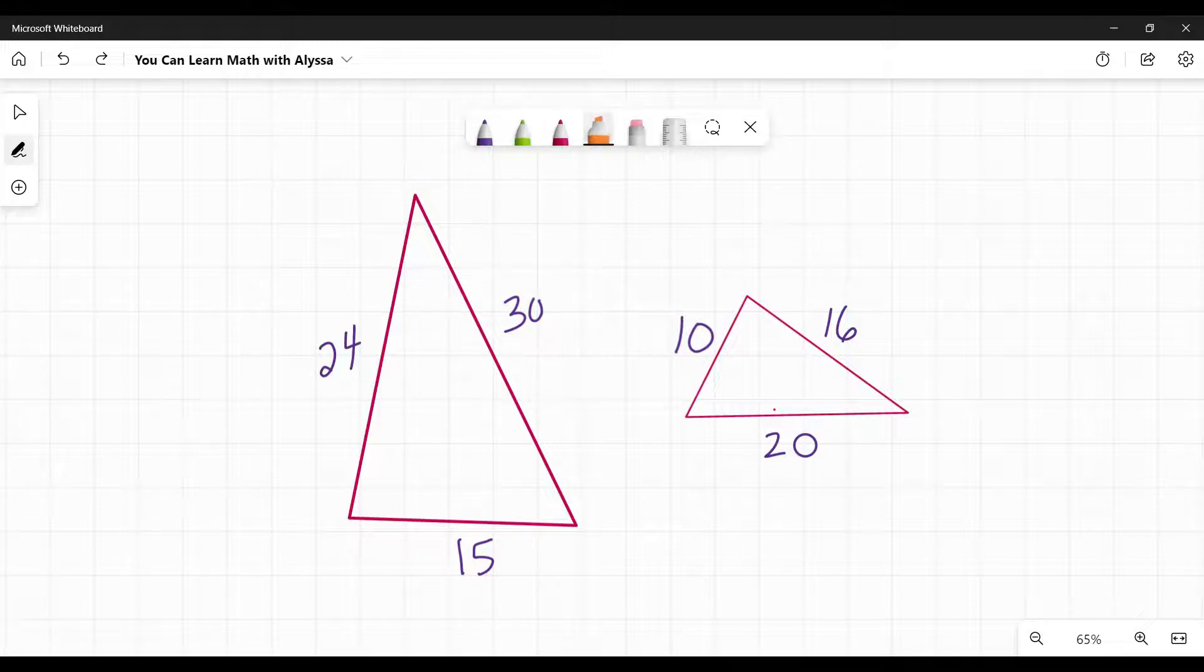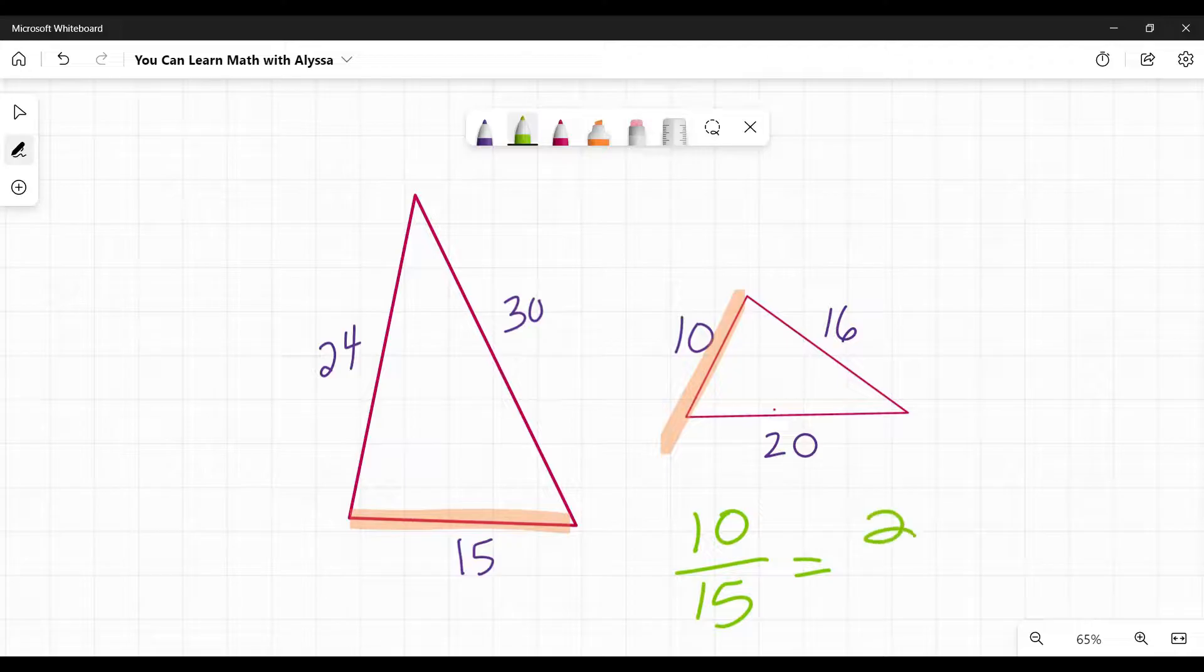So in this case, you would start with the smallest sides, which would be 10 and 15, and you can go either way. Just make sure you're going the same way each time. I'm going to start with the smaller triangle and go to the bigger triangle. So 10 to 15, and I can simplify that fraction to 2 to 3, or 2 thirds.